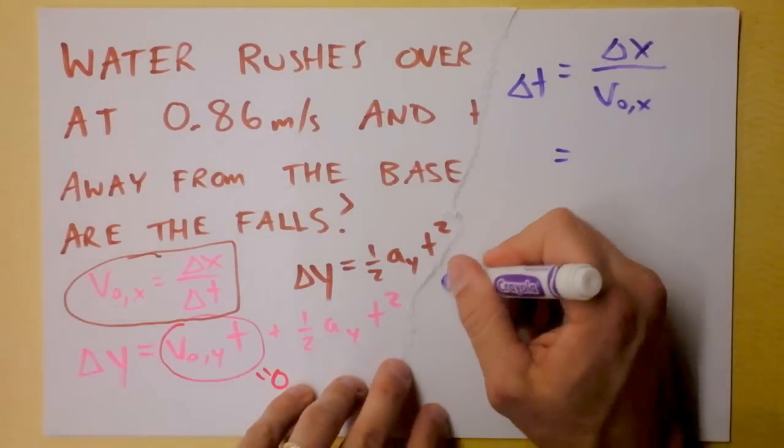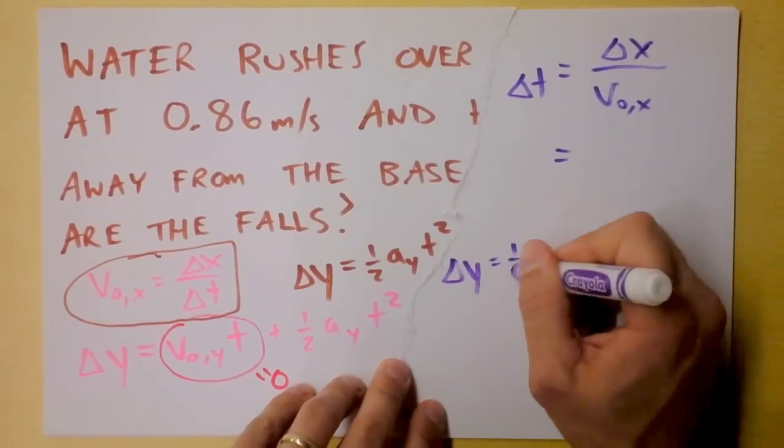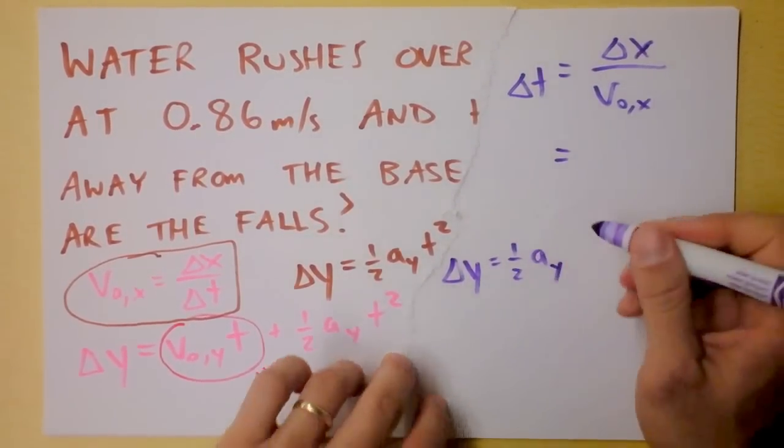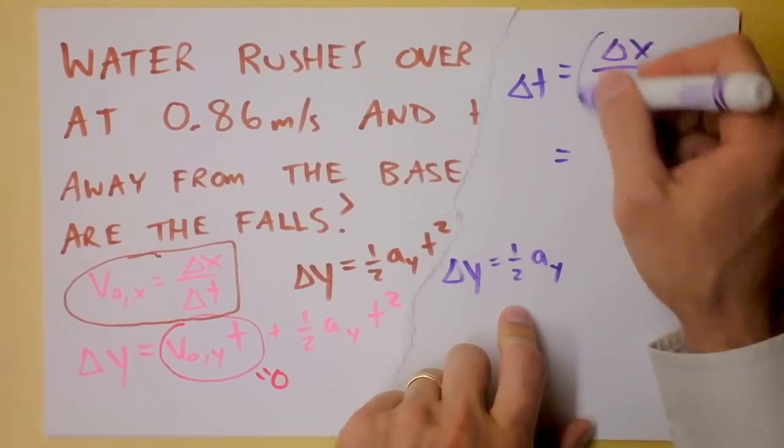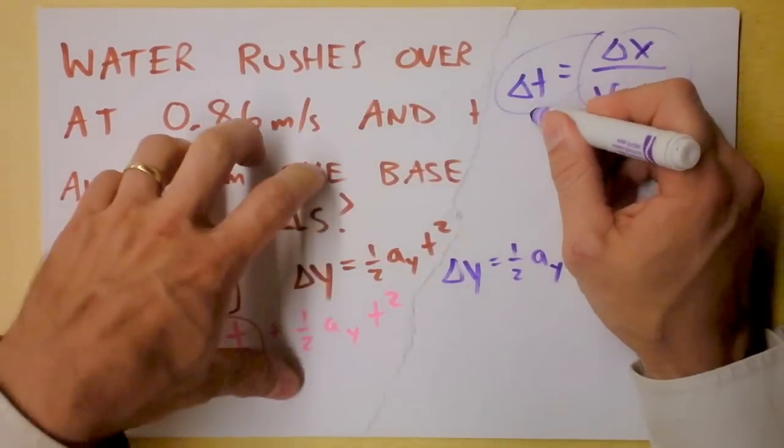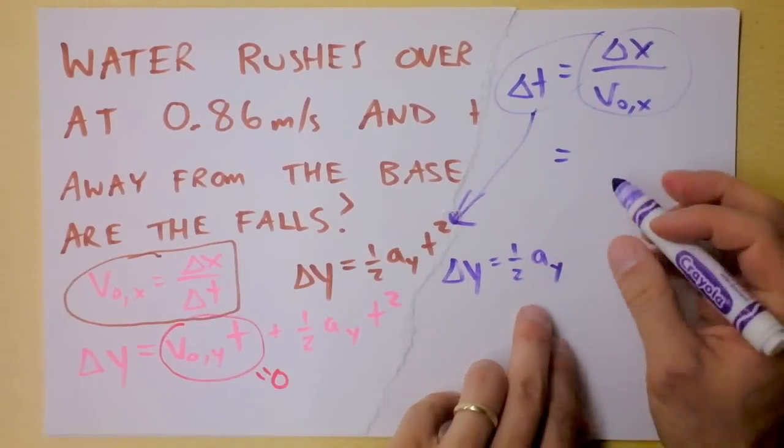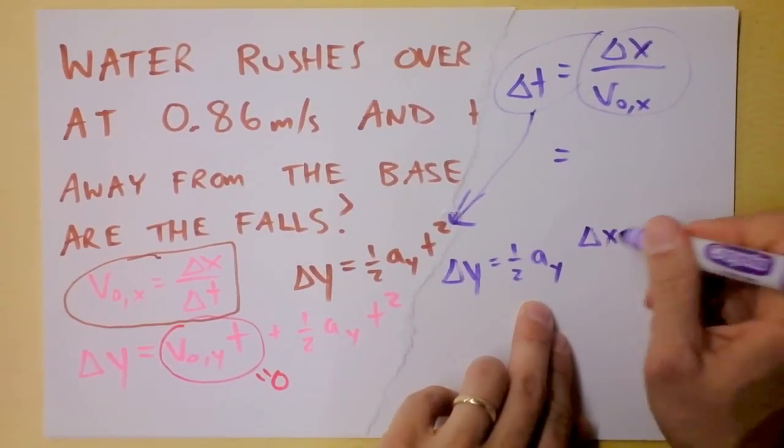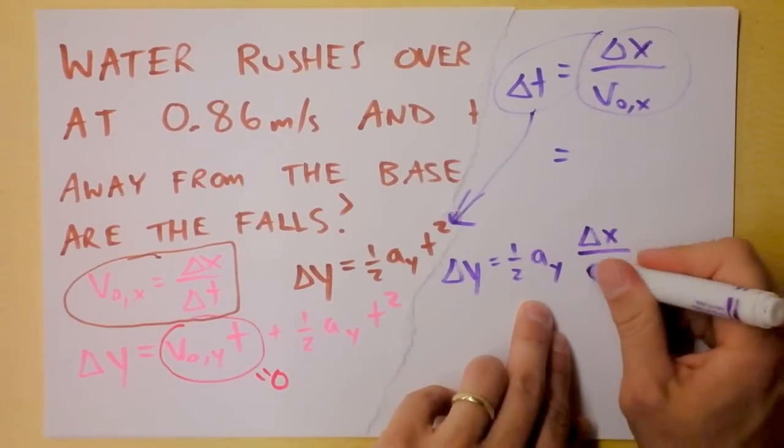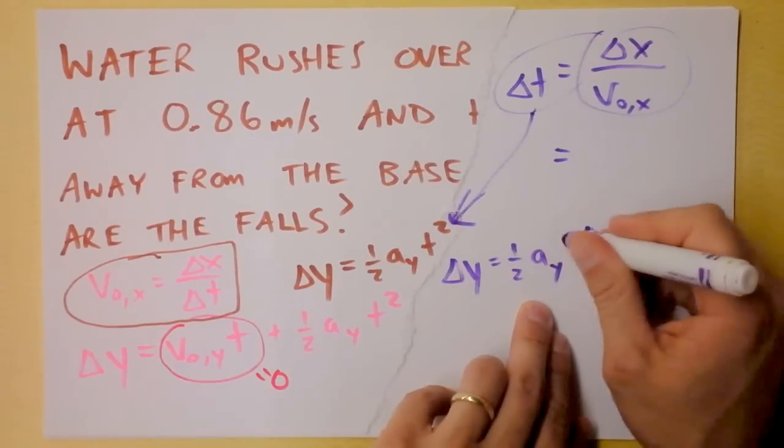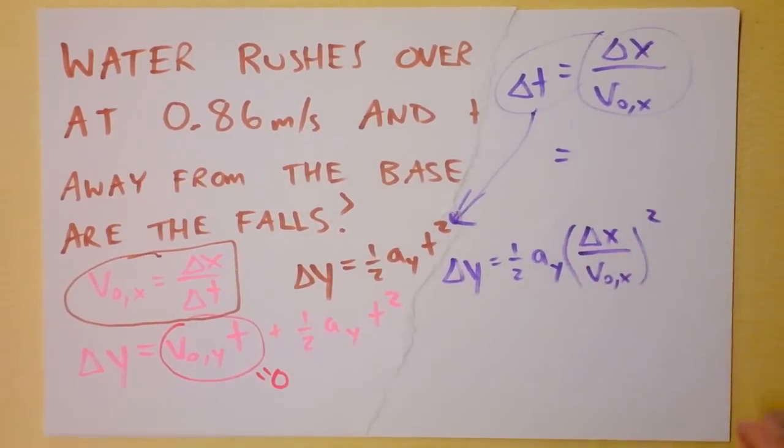Watch this. I'm going to say delta y now is one half a y and instead of writing t I'm going to write this thing as t. I'm going to plug it in to that equation right there and I'm going to have one half a y times delta x squared divided by v naught in the x direction squared. I can put those in parentheses and square them just like that.